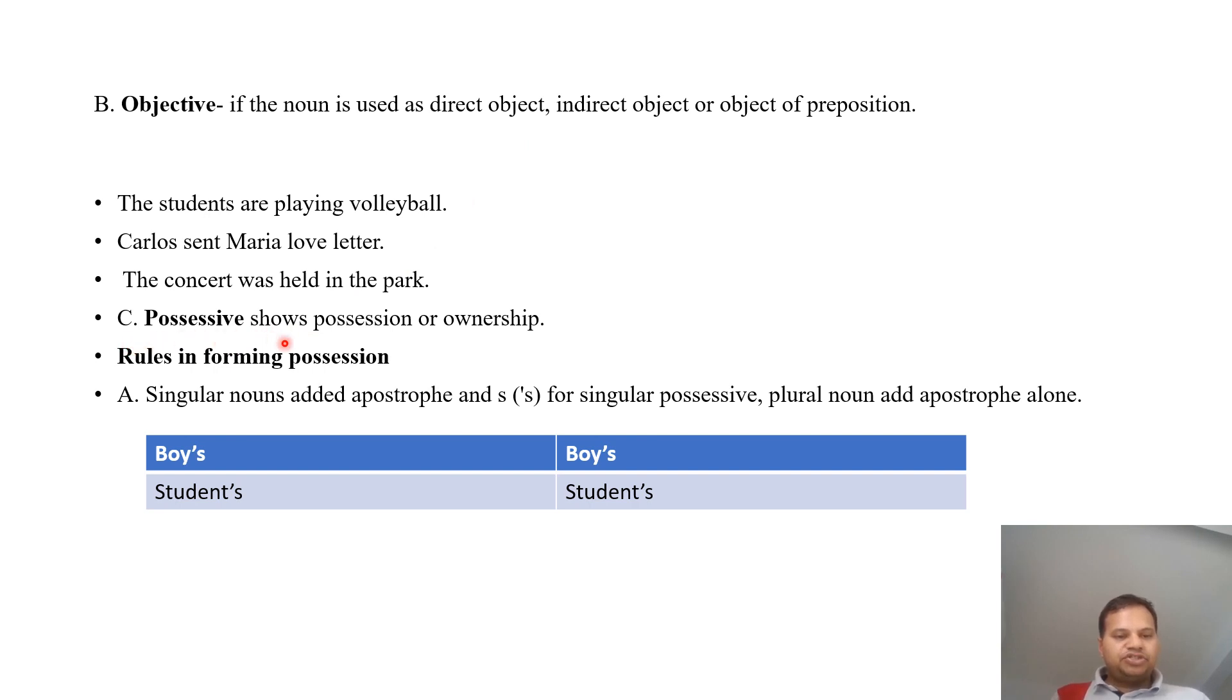Third is possessive, shows possession or ownership. For example, singular nouns add apostrophe s for singular possession. Plural nouns add apostrophe alone. Boy's, boys, student's, students.